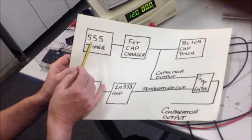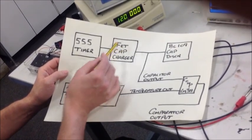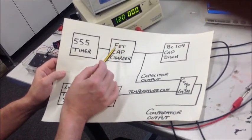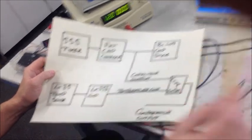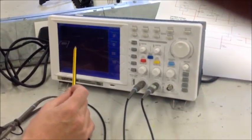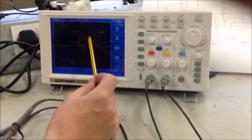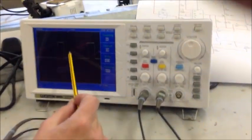This 555 timer provides a switch-on voltage for a FET cap charger. And the capacitor charger is shown on this oscilloscope here, and it provides a ramp waveform there. You can see the red ramp waveform.